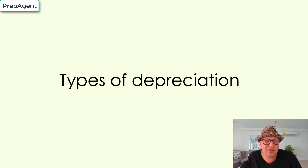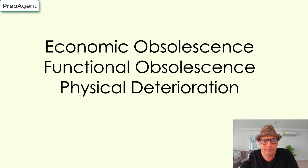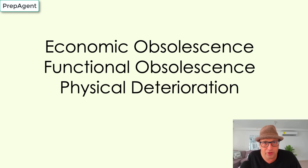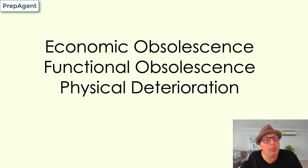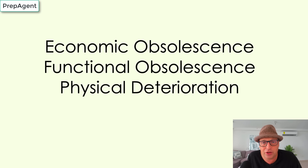Next up is types of depreciation. There are three ways your property could depreciate: economic obsolescence, functional obsolescence, and physical deterioration. Economic obsolescence is when your property loses value due to causes outside the property — like an airport being built in your neighborhood, train tracks being laid down, or crime in the area. That's the most difficult one to cure. Functional obsolescence is when there's poor design, like a five-bedroom house with one bathroom. Physical deterioration is simply your home falling apart.